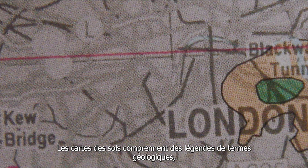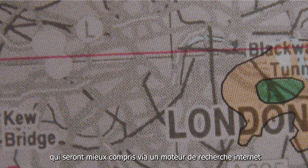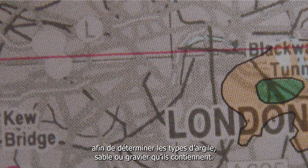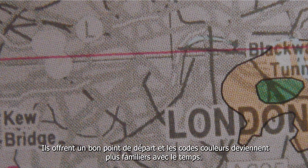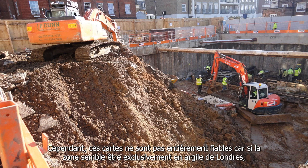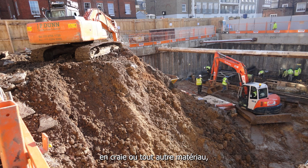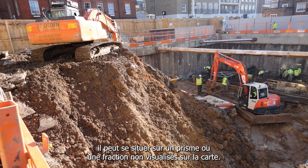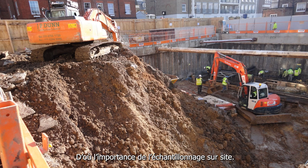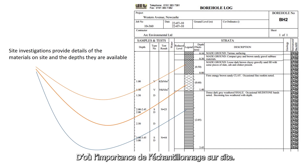Soils maps have a key which relates to geological terms, which can be better understood when put into an internet search engine to determine the kinds of clays, sands or gravels they may hold. They are a good place to start and with a little use the colour coding becomes more familiar. But soils maps are not entirely reliable, and even when it looks like the area is all London clay or chalk or any other single material, the site may sit on a prism of some other fraction not seen by the map. That's why sampling soil on site is so important.